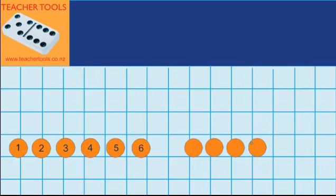You can see down here I've got two groups of counters. I've got six counters over here, and I've got four counters over here. And I want to work out how many counters I've got in total. So I can record that like this.